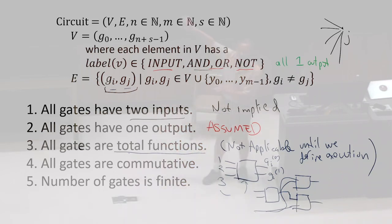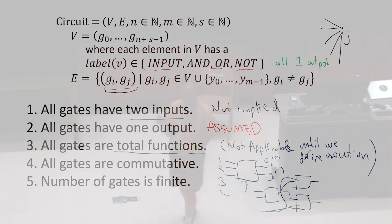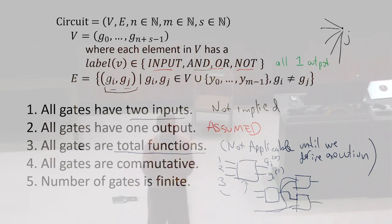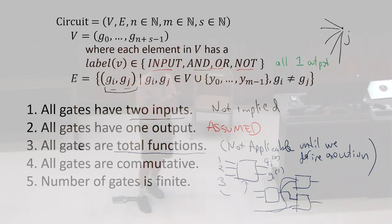Being commutative does apply because we can't distinguish the order of the inputs in our representation. If we tried to have a gate where the order mattered, it would be ambiguous what the output is. Maybe you say it's okay if the output is ambiguous, but it seems like a pretty broken representation if we have gates where the order matters.